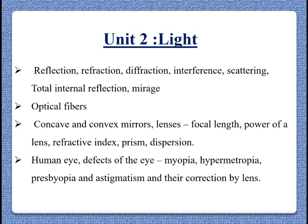Unit 2 deals with light. In this unit, the student will learn the basic concepts of light and its properties such as reflection, refraction, diffraction, interference, scattering, total internal reflection, etc., with examples from everyday life like apparent depth, the blue color of the sky, twinkling of stars, etc.